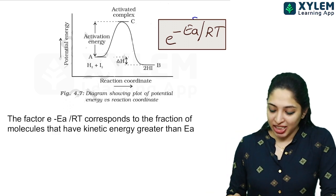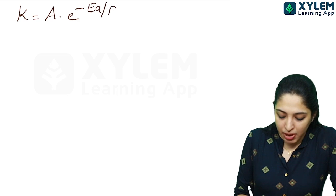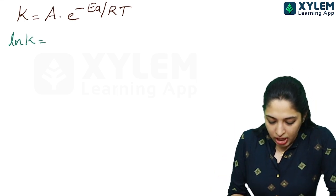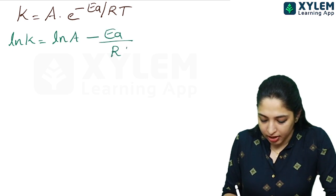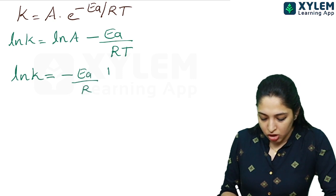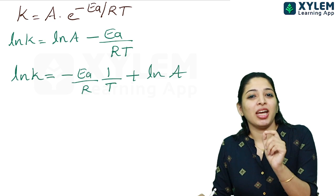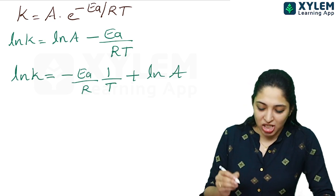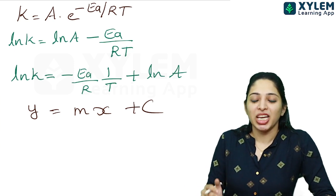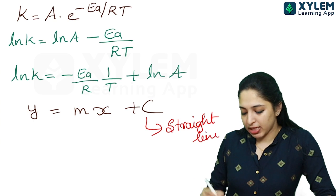We know the Arrhenius equation k is equal to A into e raised to minus Ea by RT. This becomes ln k is equal to minus Ea by RT plus ln A. In log form, log k is equal to minus Ea by 2.303 RT plus log A. This equation matches the equation for a straight line, y equal to mx plus c.